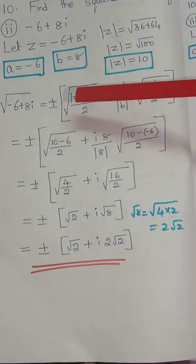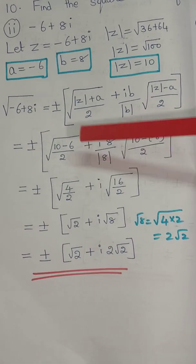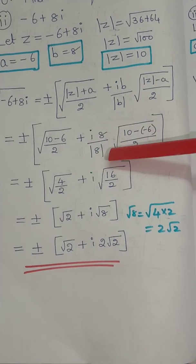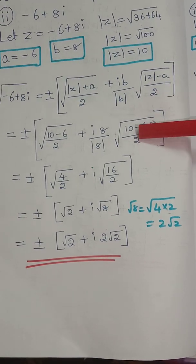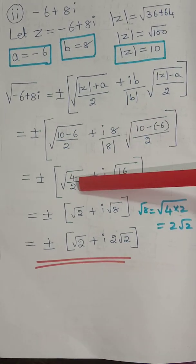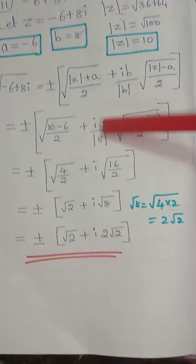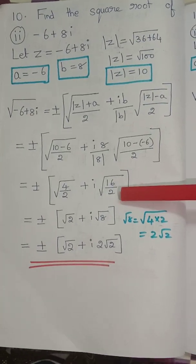Substituting into the formula: plus or minus root of 10 plus (minus 6) by 2, plus i times 8 by modulus of 8, times root of 10 minus (minus 6) by 2. That gives 10 minus 6 equals 4 by 2, and 10 plus 6 equals 16 by 2. Simplifying: root 4 by 2 gives 2, and root 16 by 2 gives root 8. Root 8 equals 4 times 2, so square root gives 2 root 2.